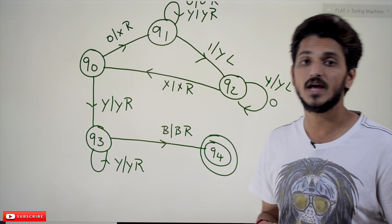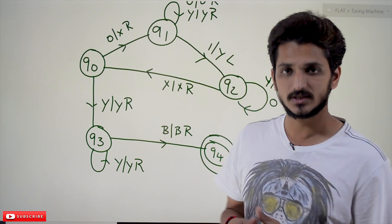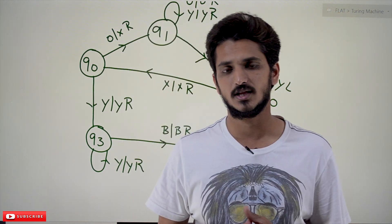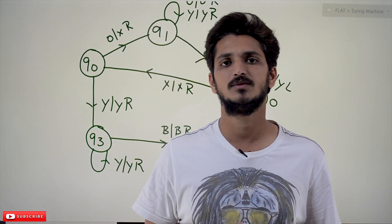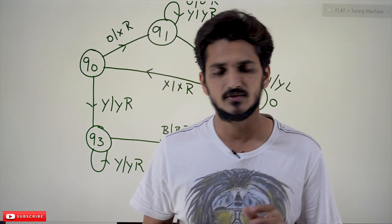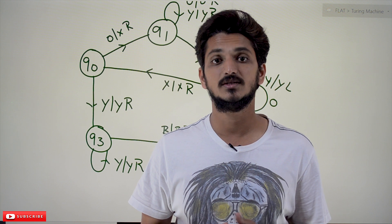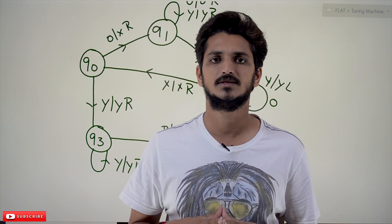This is how we write the Turing machine for 0^n 1^n. Hope you understand the concept. If you have any questions please post them in the comment section below. Thanks for watching — if you haven't subscribed to our channel please subscribe and press the bell icon for the latest updates. Thank you.